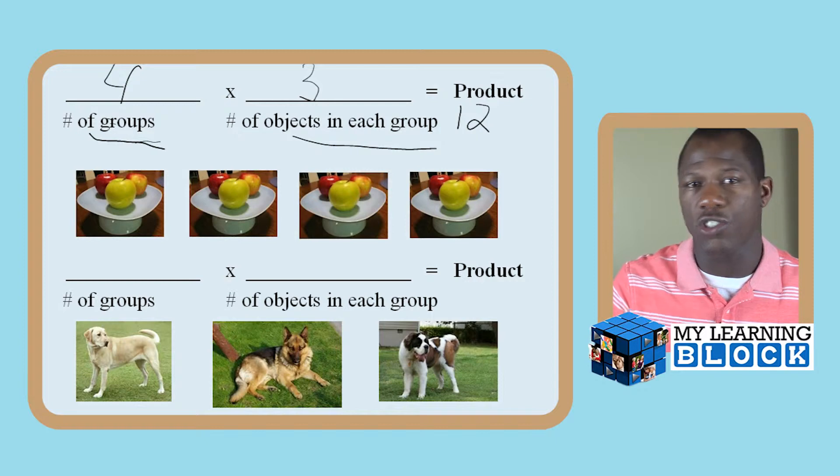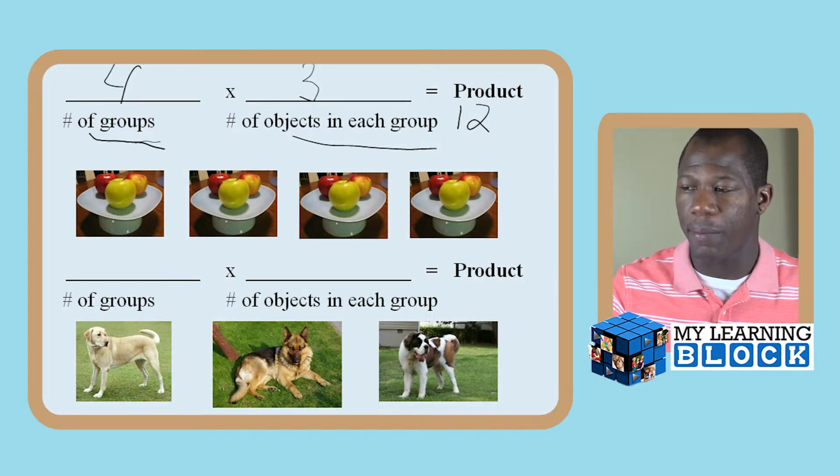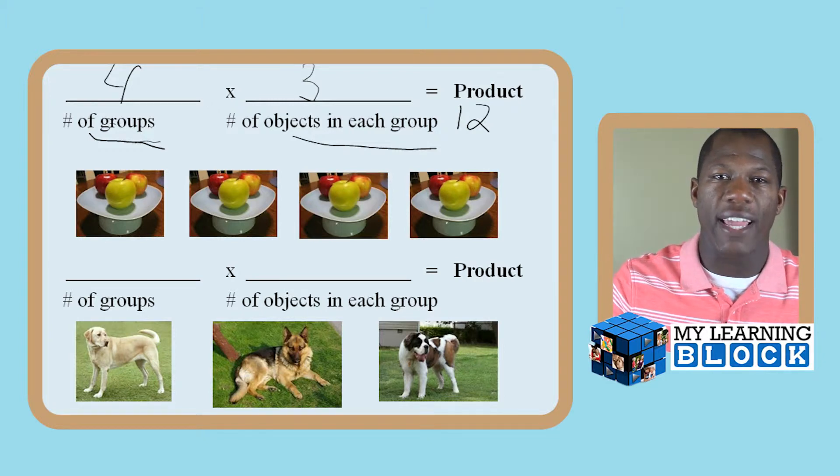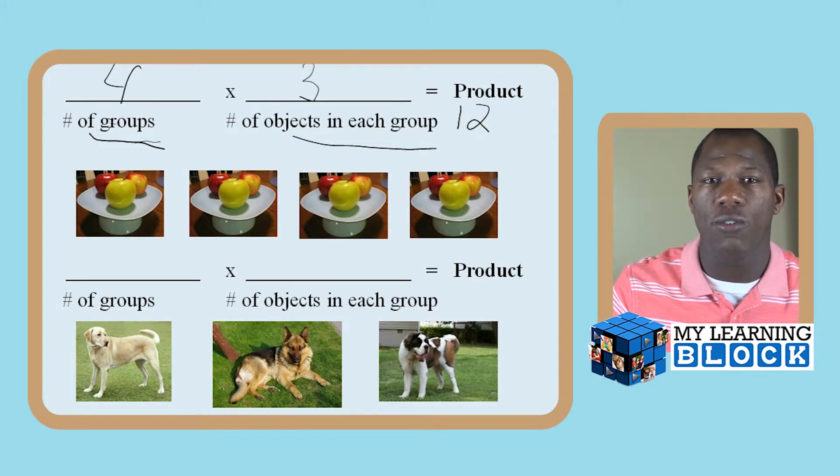A lot of times I see children try to rush through this process and they may say one, two, three, four, five, six, seven, eight, nine, ten, eleven, twelve, thirteen, and they really haven't taken their time. Make sure your child really takes their time.